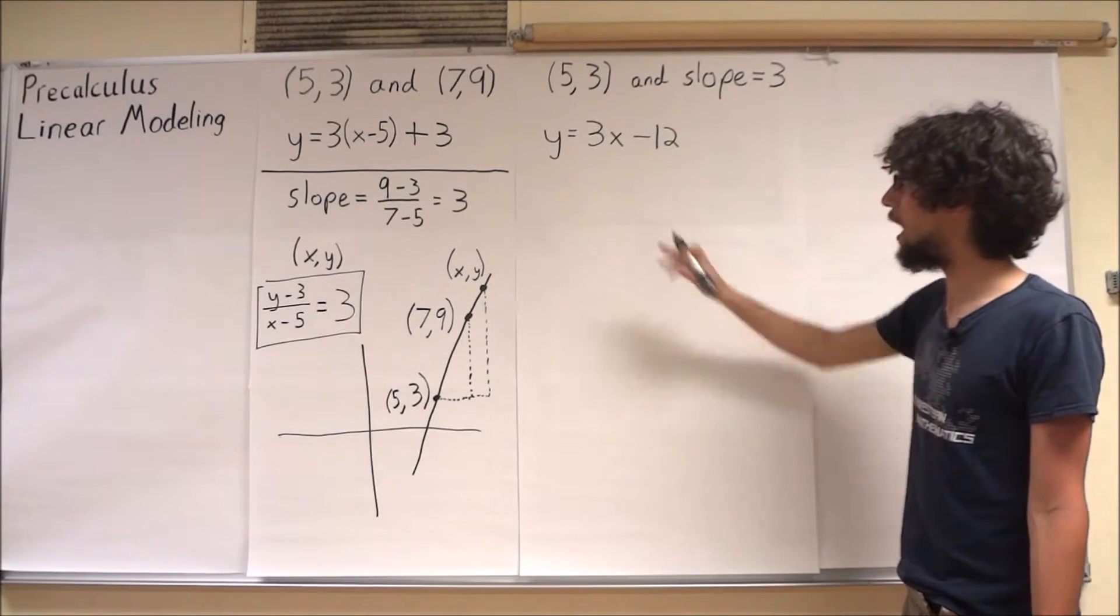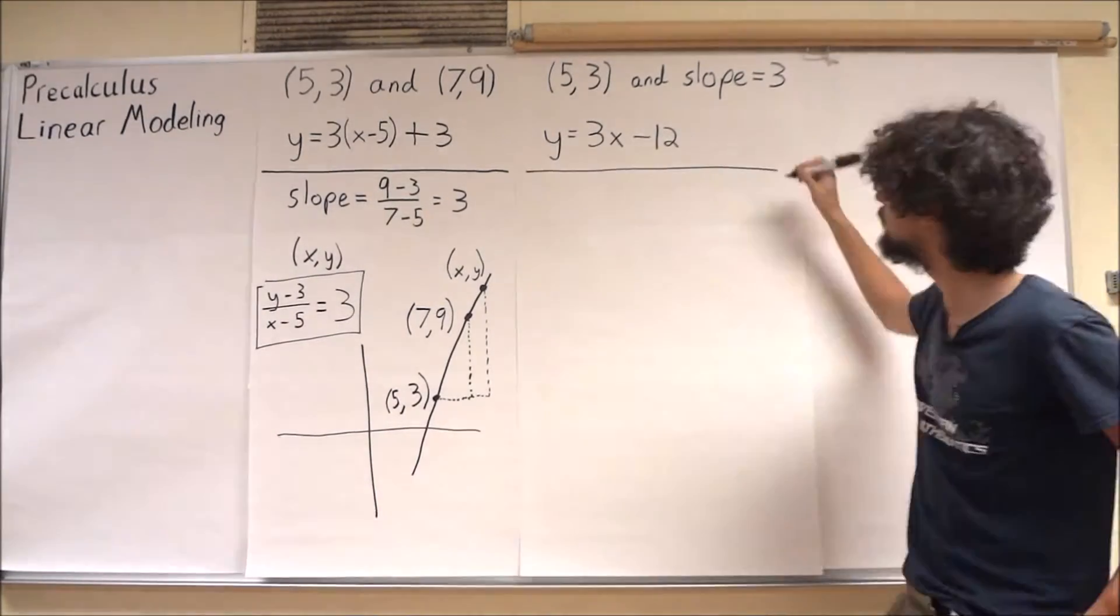When I plug in 5, I now get 15 minus 12, which is 3.